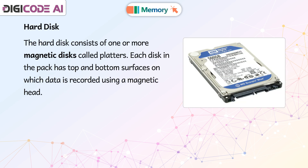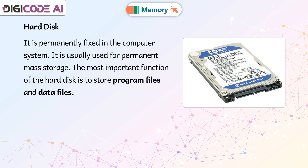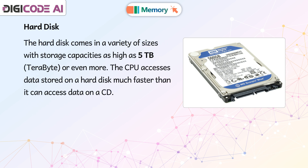Hard Disc. The hard disc consists of one or more magnetic discs called platters. Each disc in the pack has top and bottom surfaces on which data is recorded using a magnetic head. It is permanently fixed in the computer system and is usually used for permanent mass storage. The most important function of the hard disk is to store program files and data files. The hard disk comes in a variety of sizes with storage capacities as high as 5 TB (terabyte) or even more. The CPU accesses data stored on a hard disk much faster than it can access data on a CD.